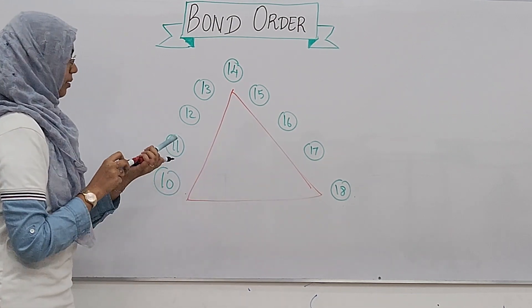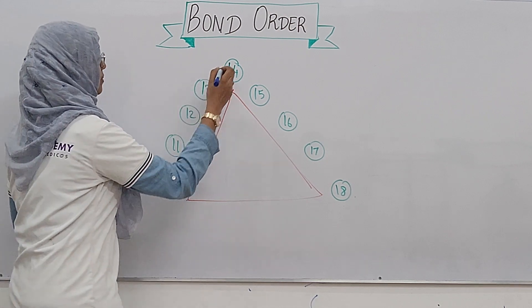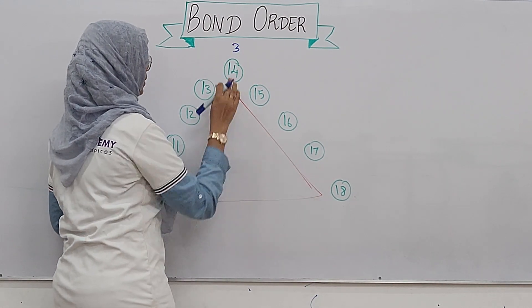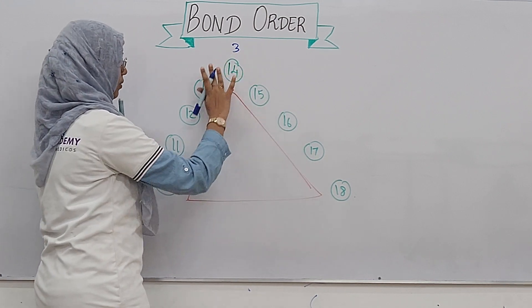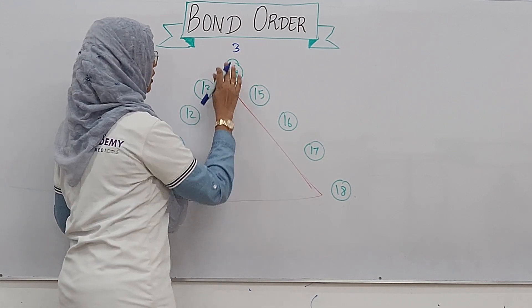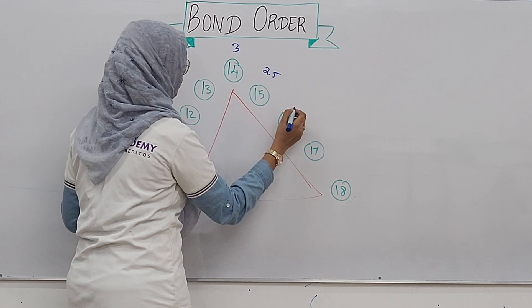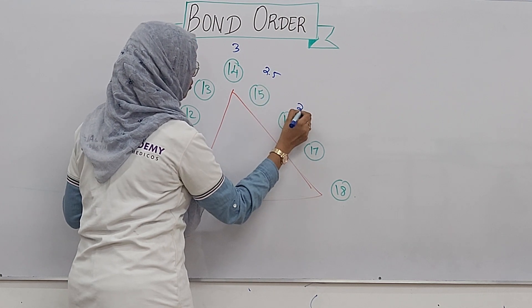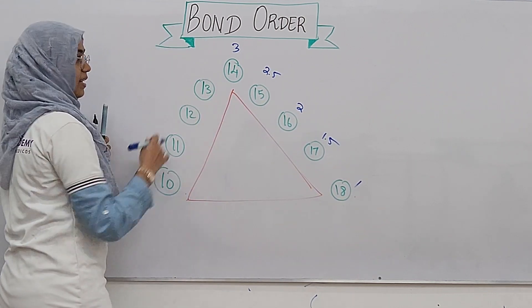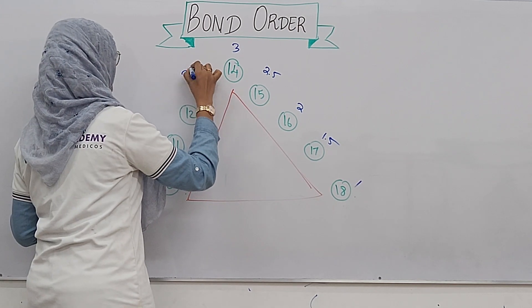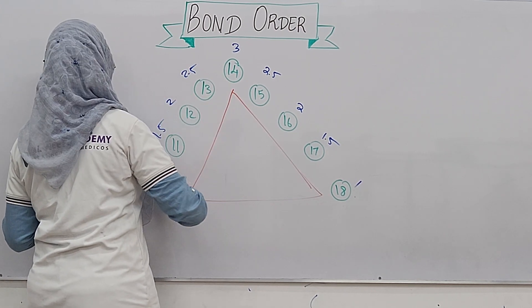The maximum bond order is 3, and the minimum step value is 0.5. So the bond order values decrease by 0.5 each step: 3, 2.5, 2, 1.5, 1, 0.5.